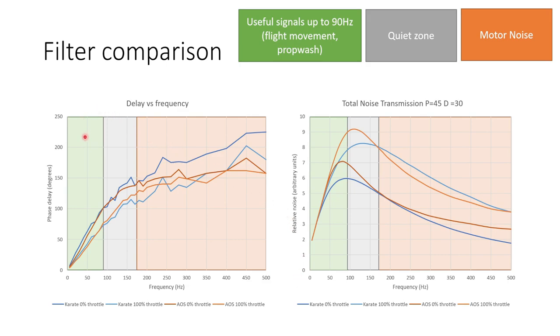Now I've called out three frequency bands. The green frequency band is the useful signals up to about 90 hertz. Now this will consist of flight movement and prop wash. Next we have the quiet zone which typically goes from about 90 hertz to 170 hertz or even higher on very quiet frames. And here we don't tend to see much noise at all on good quads. And then the orange zone is the zone where we start seeing motor noise. So what we're looking for out of a filter approach is the minimum possible delay in the green zone and then the maximum possible attenuation in the orange zone. And if you want to play with this tool I'm going to put a link to it down in the video description. It's an Excel spreadsheet and you can have a go looking at how different filter settings perform.